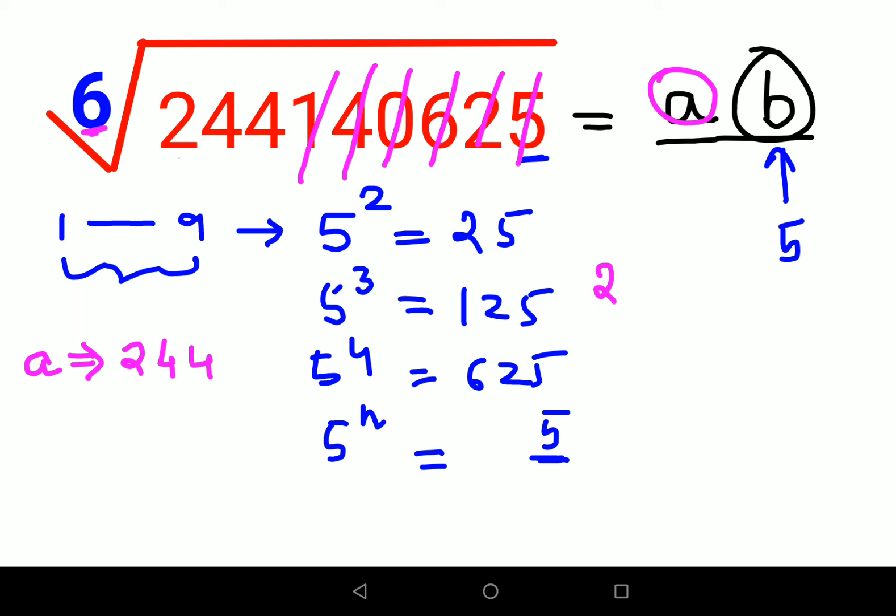Now what we will do is try to find out what is 2 raised to 6, 3 raised to 6, and so on and so forth. Now 2 raised to 6, I can write this as 2 cube the whole raised to 2. 2 cube is 8, and 8 raised to 2 gets you 8 square, so the answer for 2 raised to 6 is 64.